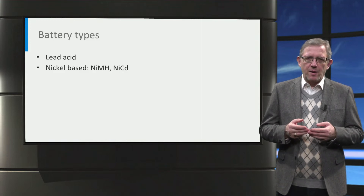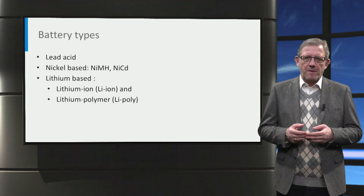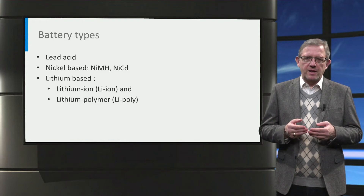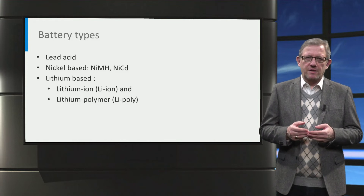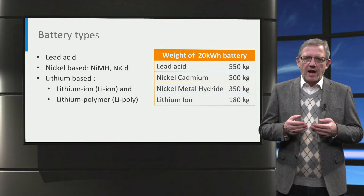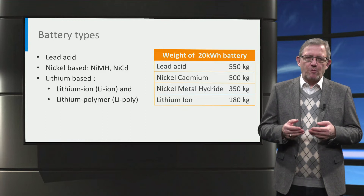Next are the nickel-metal hydride batteries. They have been extensively used for traction purposes and are optimized for high energy content. Finally, and the most popular, are lithium-based batteries. Lithium batteries are classified by the type of active material into lithium-ion liquid electrolytes and lithium-ion polymer electrolyte batteries. The lithium-ion battery is generally preferred for electric vehicle applications, mainly driven by its high energy density. The table shows how a 20 kilowatt-hour lithium-ion battery has a much lower weight than its competitors.